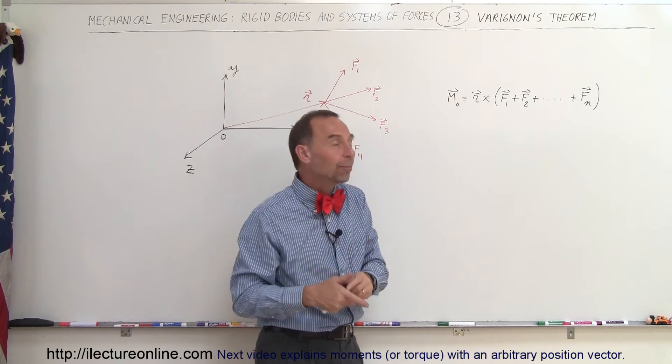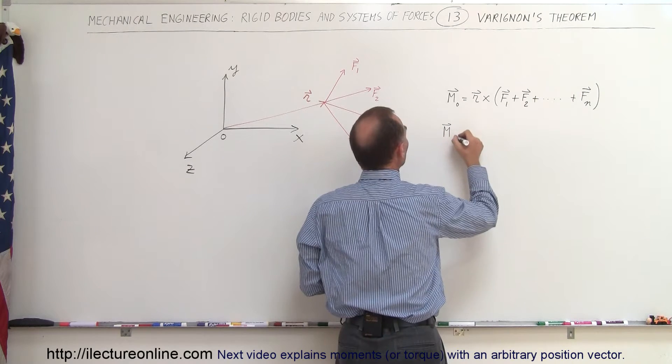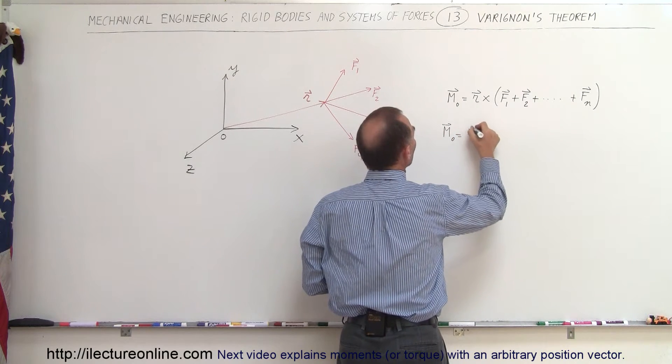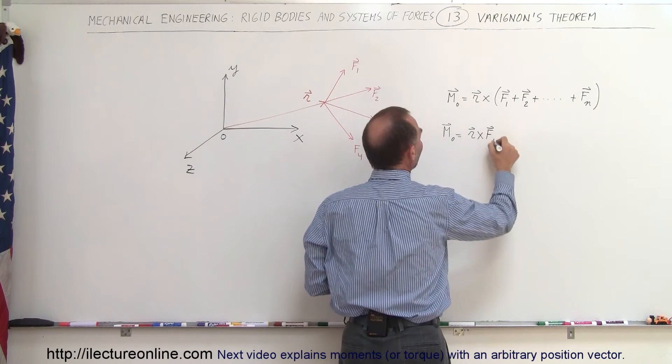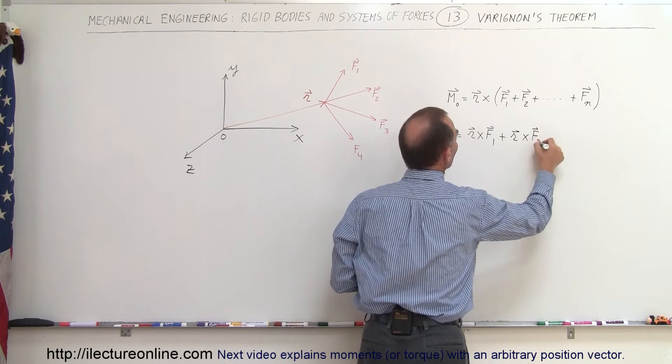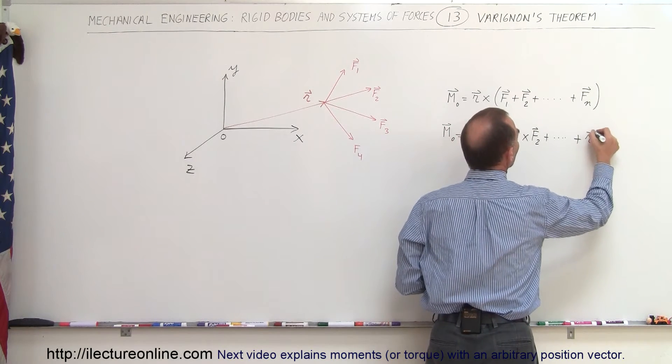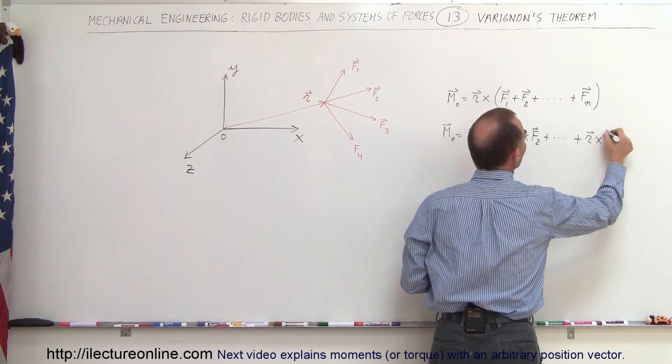And how do we practically apply that? Well, it turns out we can then write this as the moment is therefore equal to r cross the first force vector plus r cross the second force vector plus and so forth until we've done it all the way around to r cross the final force vector.